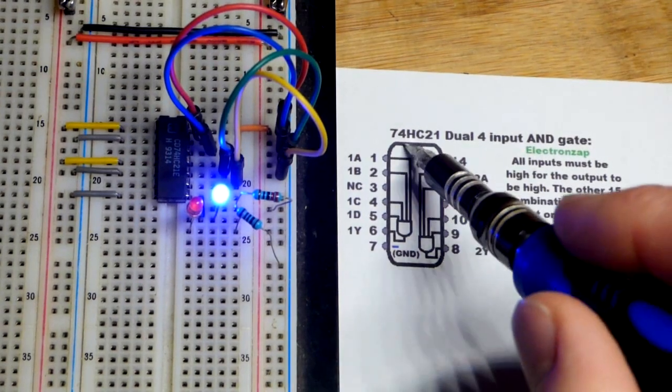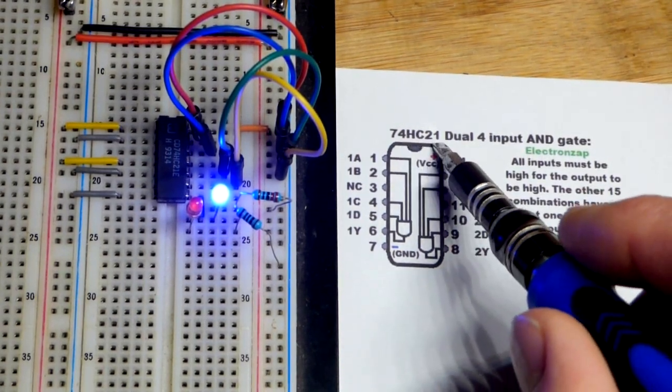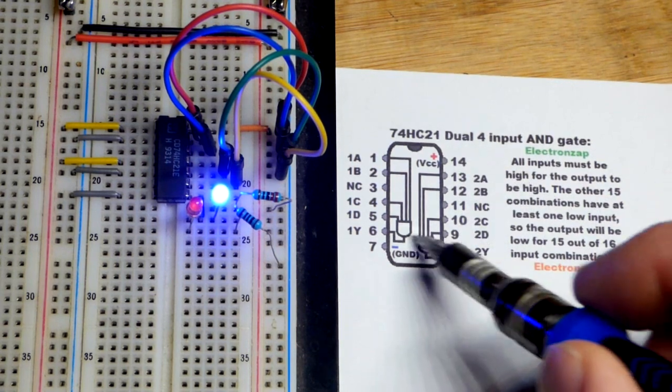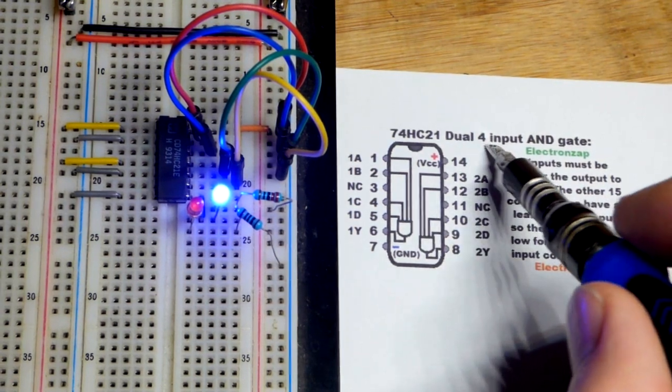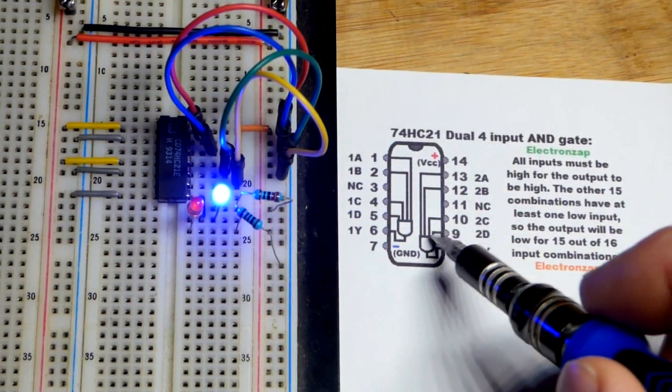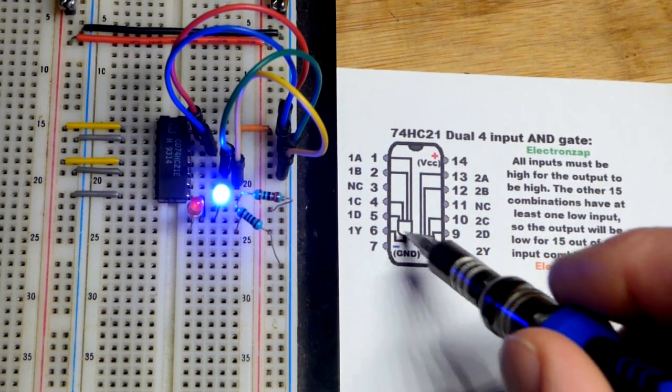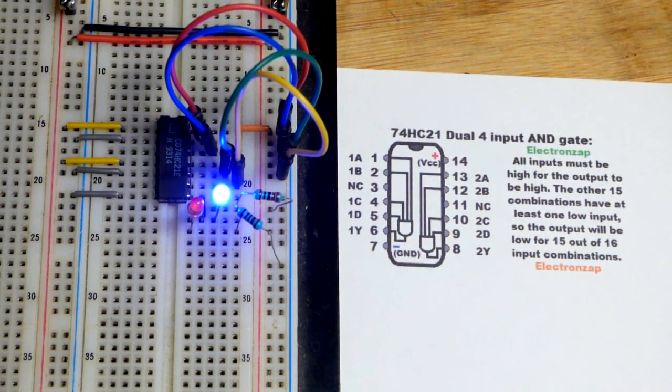So now in this video we're going to take a quick look at the 74HC21. It is a dual - you can see there's two of them in the integrated circuit - four input, you can see they got four inputs, AND logic gate. That's the AND logic gate symbol right there.